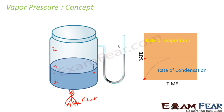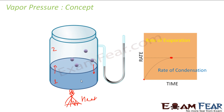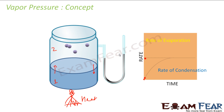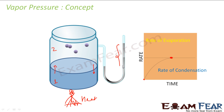Let's see the animation once more. To start, the rate of evaporation had some value but the condensation rate was zero. After heating, particles went up and the rate of condensation started increasing. Then a state was reached where evaporation and condensation rates were the same, and the pressure became constant — it increased, increased, then reached a constant value. That pressure is called vapor pressure.